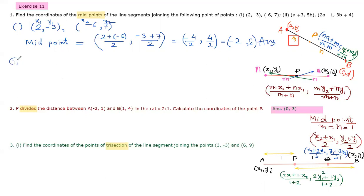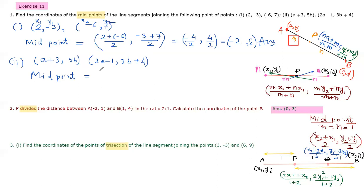The second question: the point is not only in numbers, it is also associated with letters. So (a+3) is x1 and 5b is y1. The second point: (2a-1) is x2 and (3b+4) is y2. Same logic. For the midpoint, we add x1 and x2: (a+3) + (2a-1), divided by 2, and (5b) + (3b+4), divided by 2.